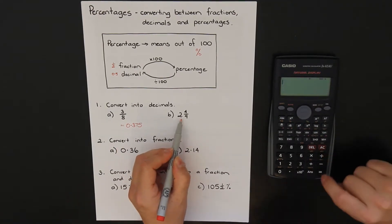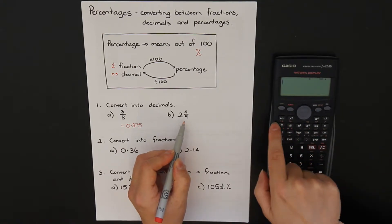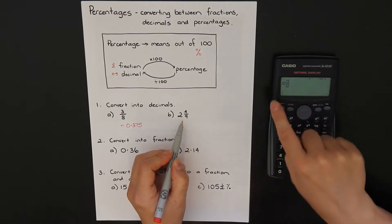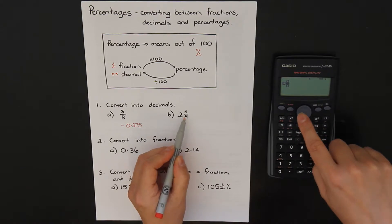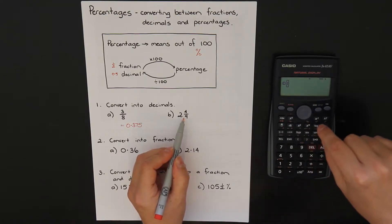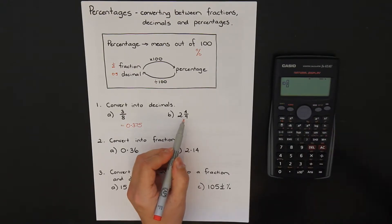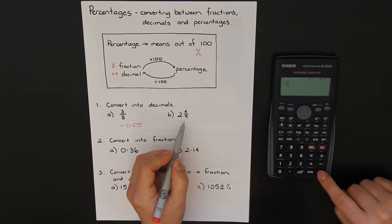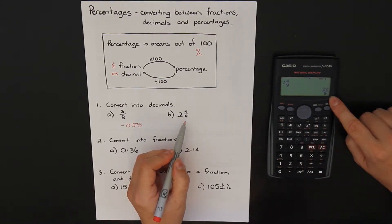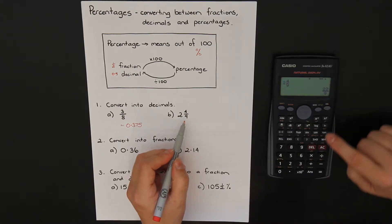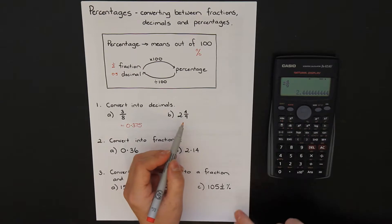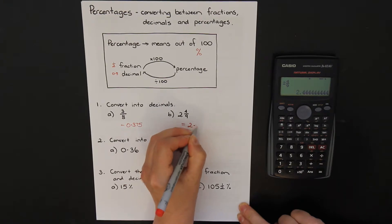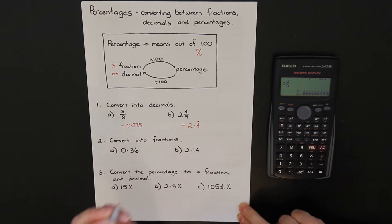For the second question I have a mixed numeral. Pressing shift gives me the mixed numeral button with three boxes. I need that box out the front — you can't just put the 2 out the front and then have a fraction after it because that will multiply them together. So the 2 goes out the front, 4 on the top and 9 on the bottom. Press equals — mine changed it into an improper fraction. I push the button and it changed it into a decimal: 2.4 with a dot above, meaning 4 repeating — a recurring decimal.